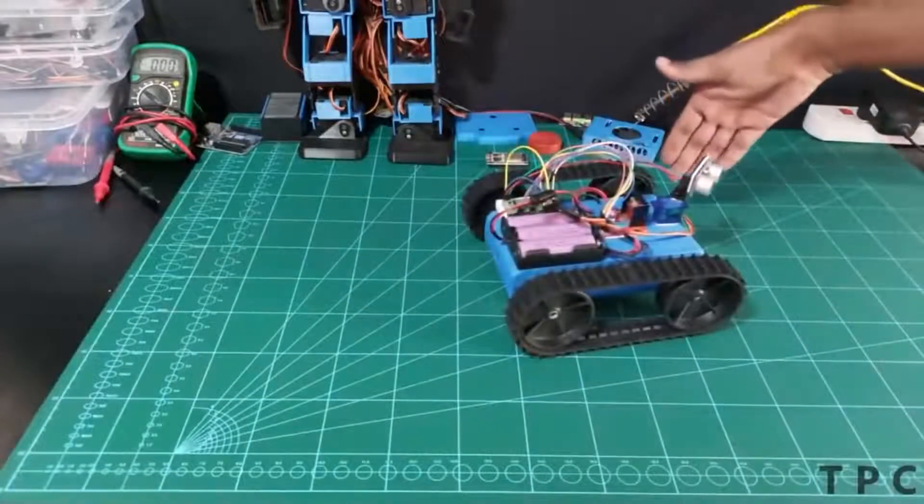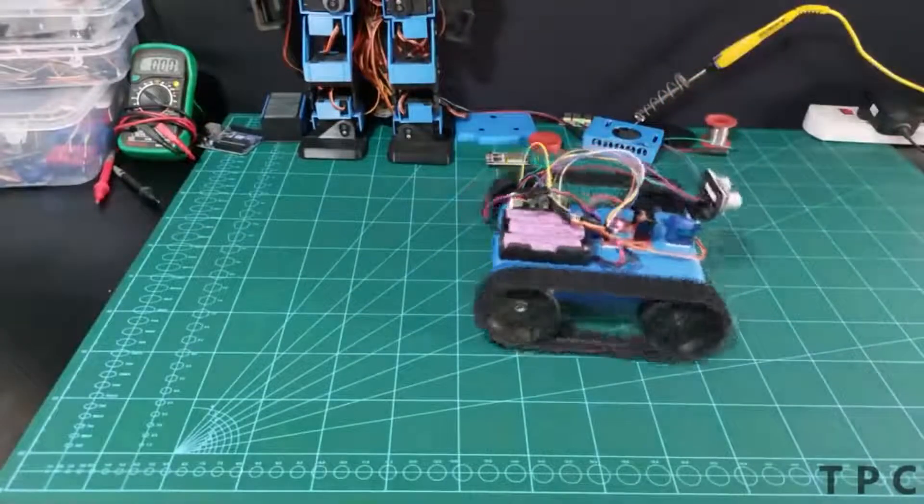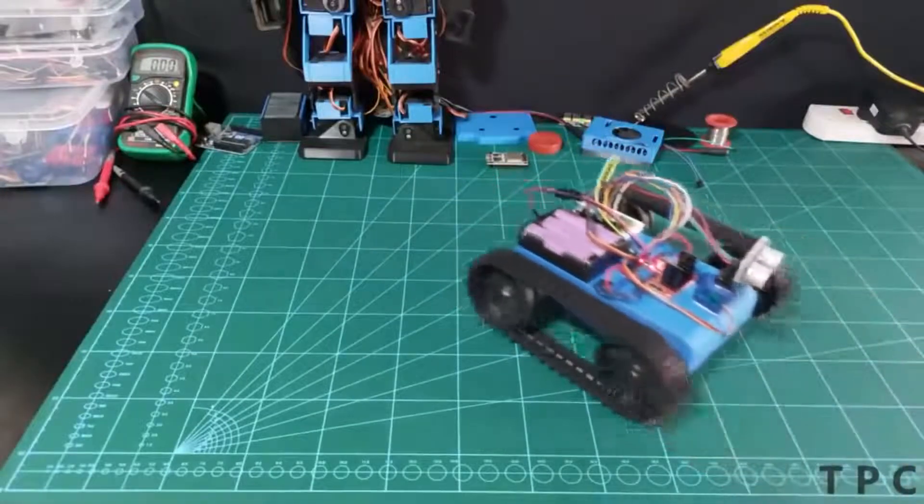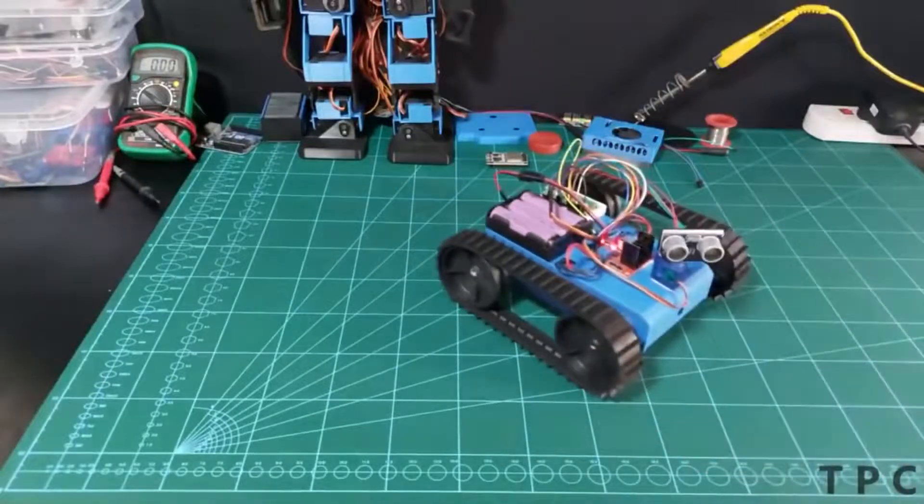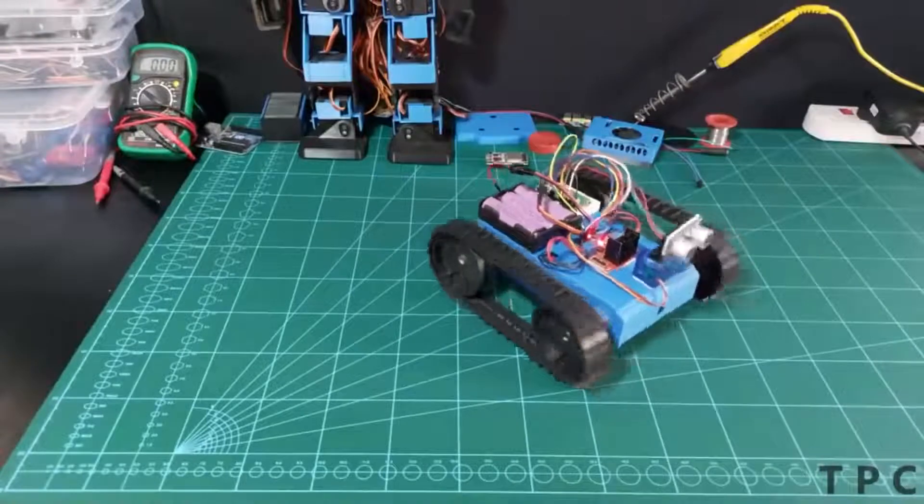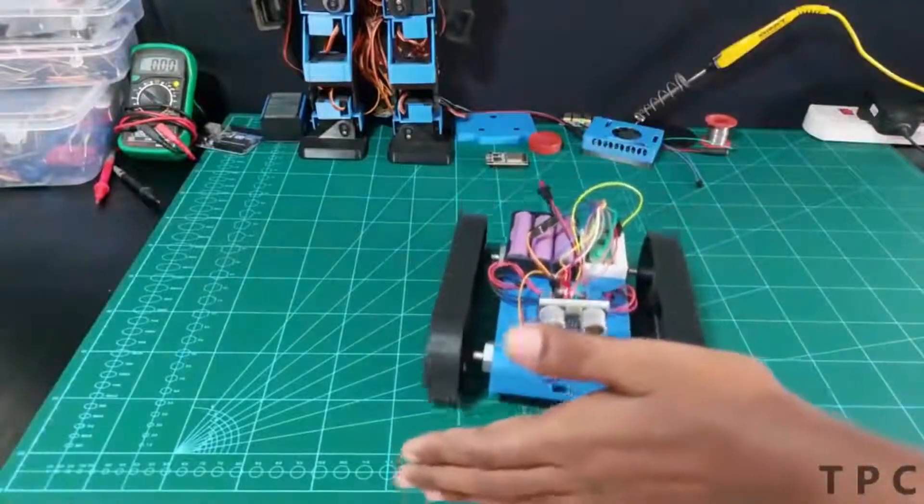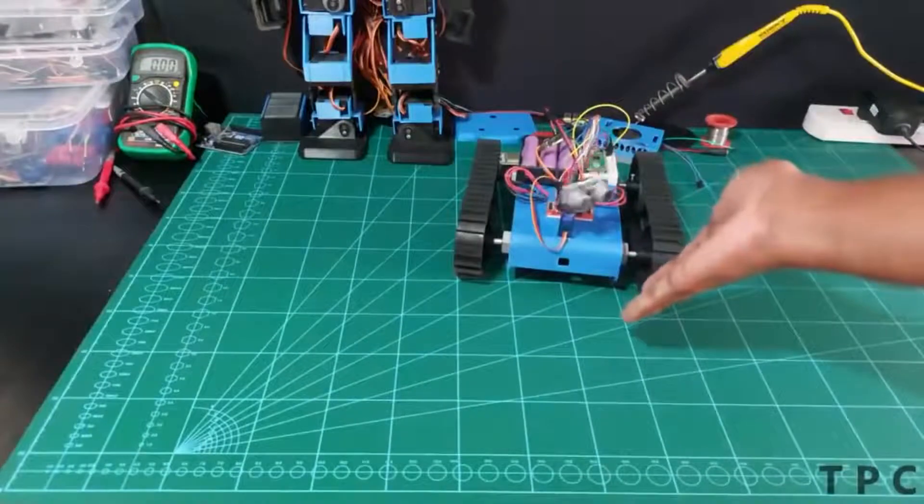The robot stops as soon as the distance between the sensor and object is less than the predefined value. It again checks for a new direction to keep moving. This way it never collides with nearby objects. So can you guess some practical application for this project? Tell us in the comments.